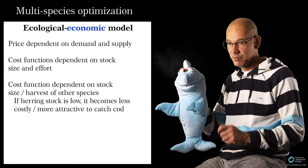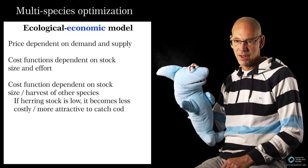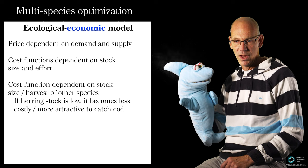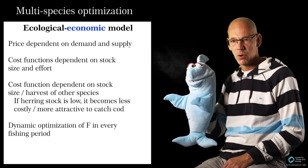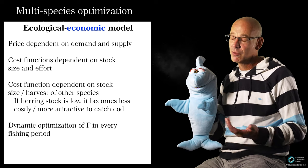Cost functions depend on stock size and effort. In this case, we also included an economic interaction. The cost function also depends on the stock size of the other species. In a way, this mirrors that it becomes more attractive to catch cod if the herring stock is low and vice versa.